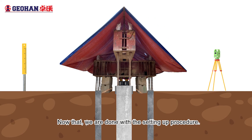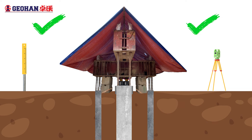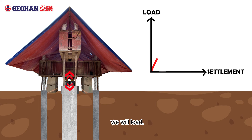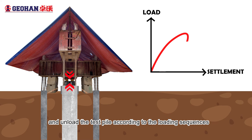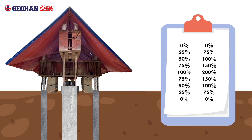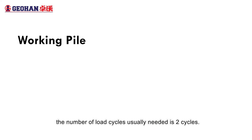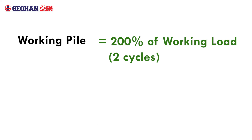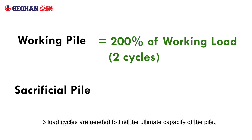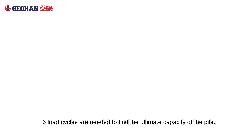Now that we are done with the setup procedure, to carry out the testing works, we will load and unload the test pile according to the loading sequences and number of cycles specified by the engineer. For testing a working pile, the number of load cycles usually needed is 2 cycles. But for testing the sacrificial pile, 3 load cycles are needed to find the ultimate capacity of the pile.